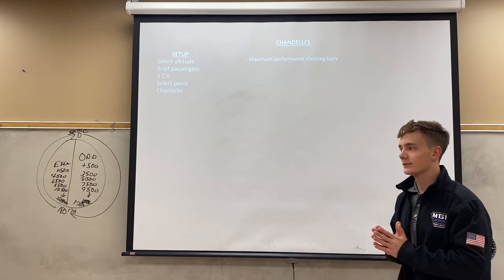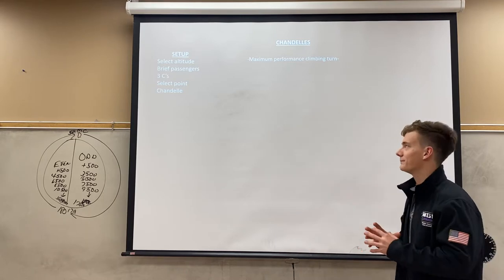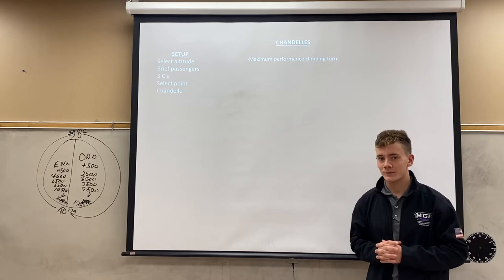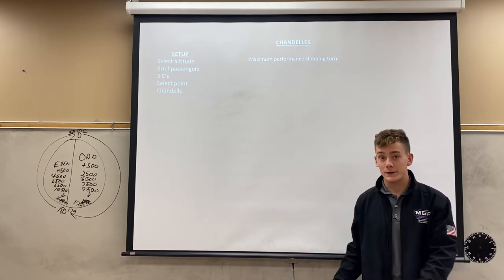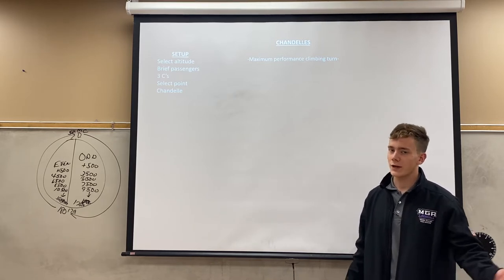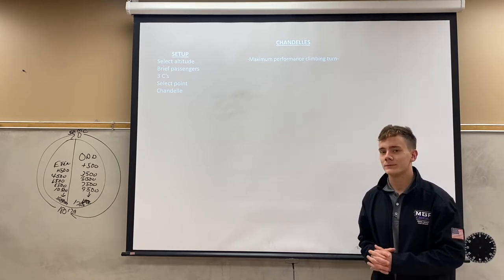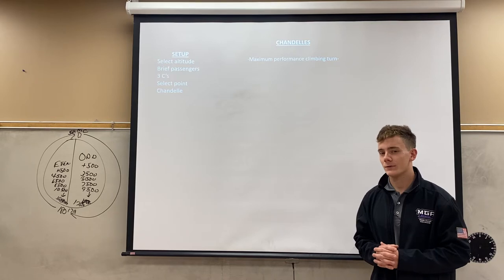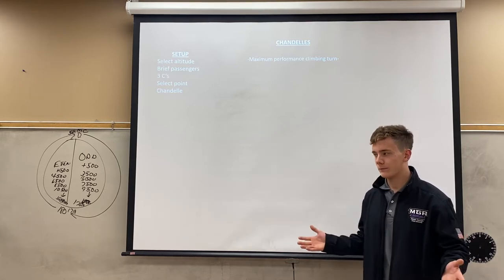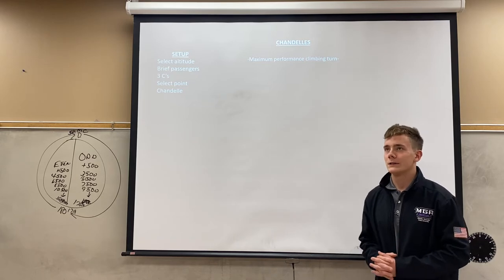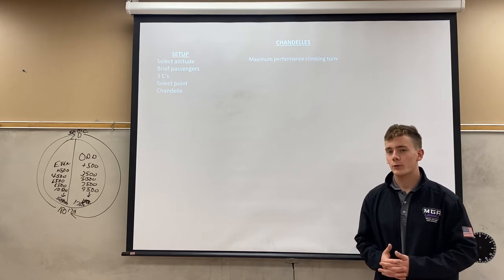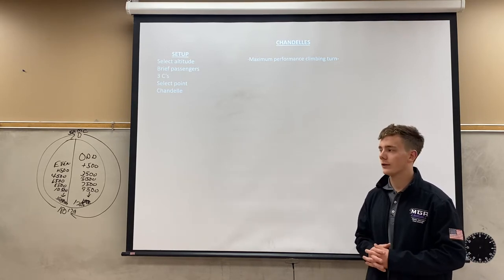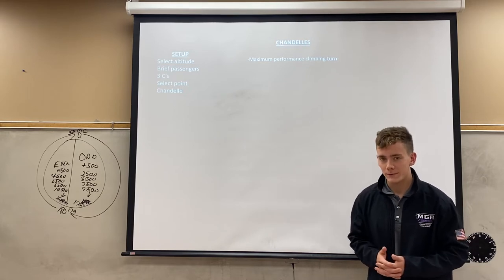So how does this look? Let's get into the setup. First thing with your setup is to select your altitude, as with any maneuver. This isn't a ground reference maneuver, which has an altitude of 600 to 1,000 feet AGL. But it does have a minimum altitude, which is 1,500 feet AGL. For the sake of middle Georgia, we have a field elevation of about 303 feet, so the minimum altitude to start a Chandelle would be around 1,800 feet MSL.